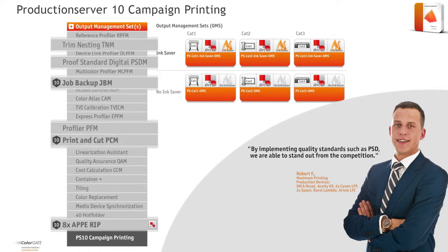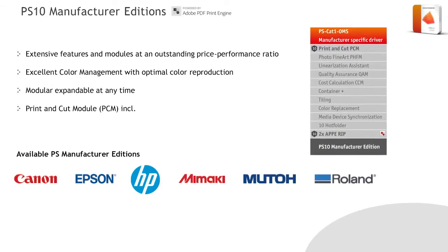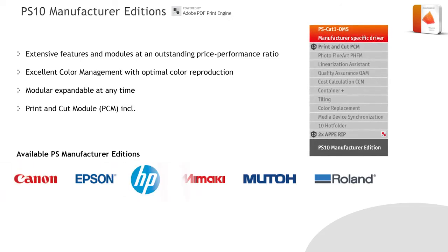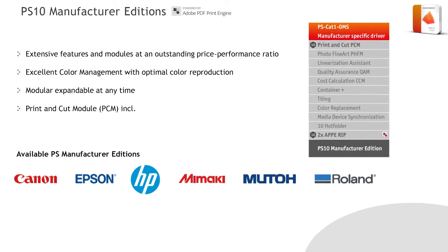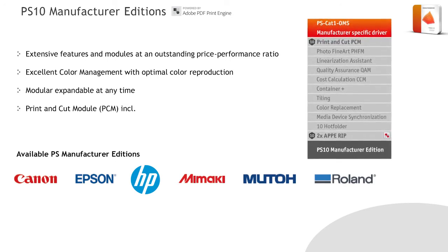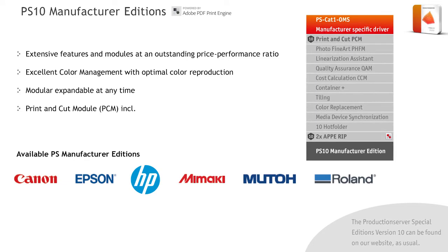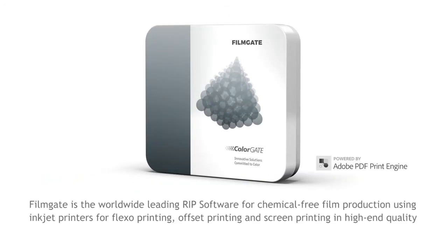Furthermore, an automated Cut Workflow — for example Flexa or Fotoba — is made possible via the Trim Nesting Module, TNM. The Production Server 10 Manufacturer Editions are geared exactly to the supported printers of the respective manufacturer for versatile large- and wide-format printing and signage printing applications, offering extensive features and modules at an outstanding price-performance ratio. Additional solutions, such as the Production Server 10 Lite or Special Editions, can be found on our website.